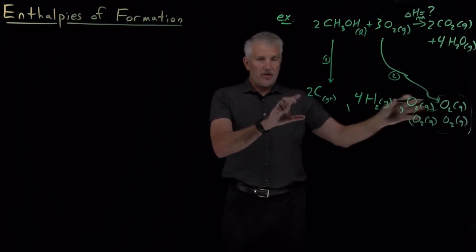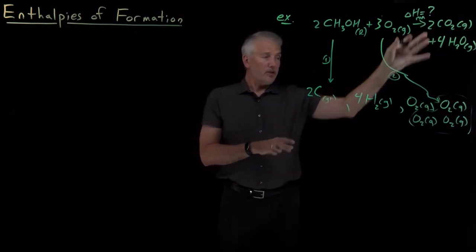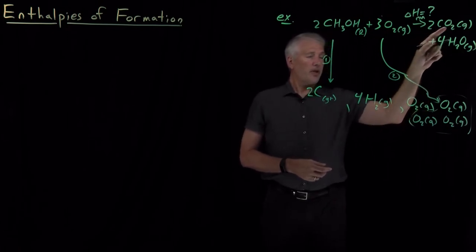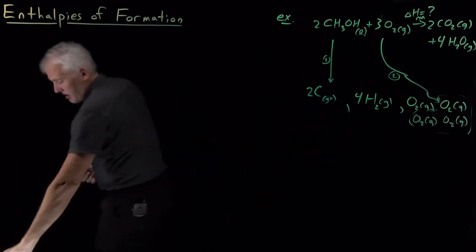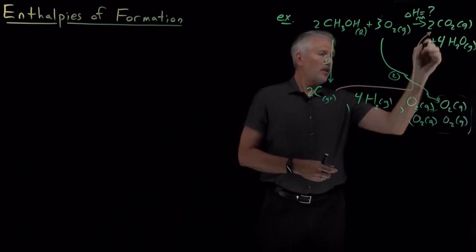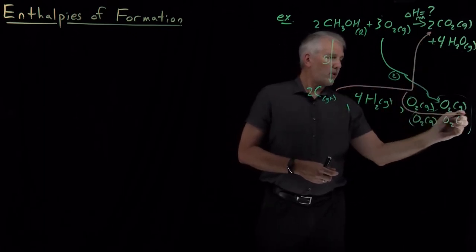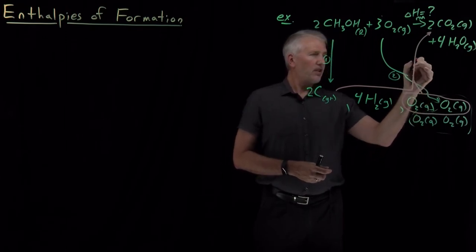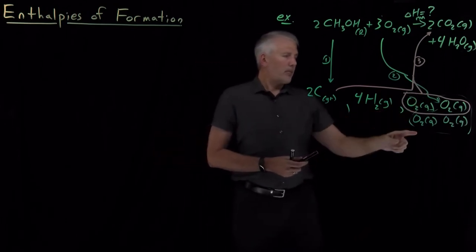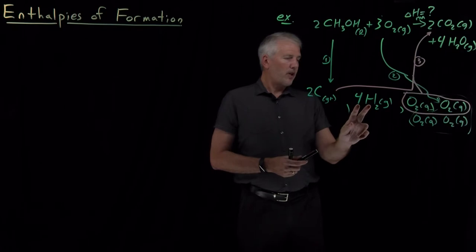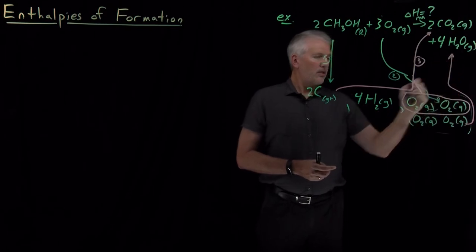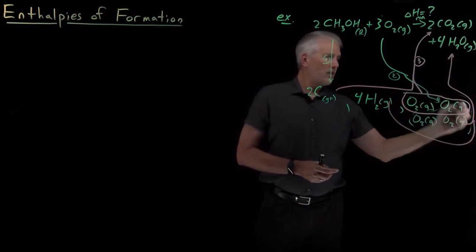Now that I've got all elements in their standard states, I can start reassembling them into products. Starting with the CO2s: two CO2s require these two carbons and two oxygen molecules reassembled — that's step number three. Step number four is the remaining pieces: four H2 molecules and one oxygen molecule combine to make four water molecules.